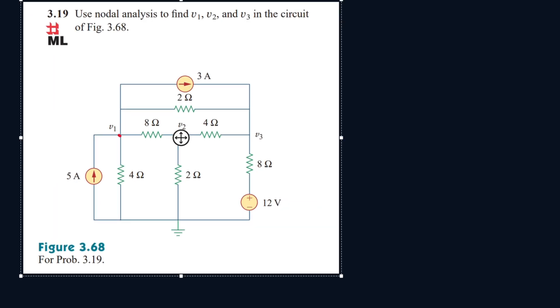Alright, so for this circuit we have to find V1, V2, and V3. Let's write directions of current: this is I1, I2, I3, I4, I5, I6.